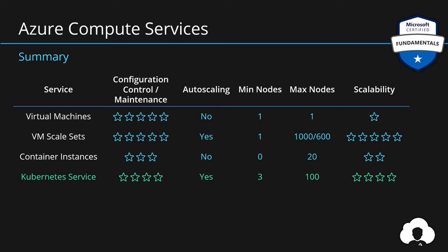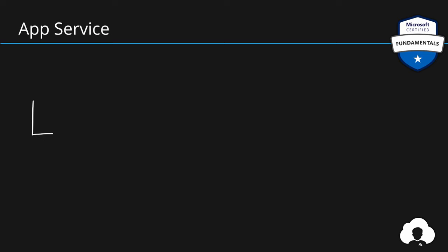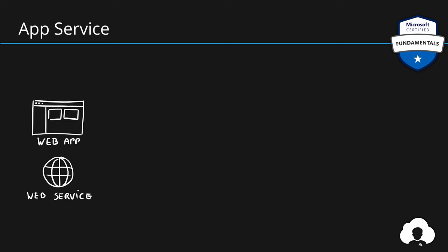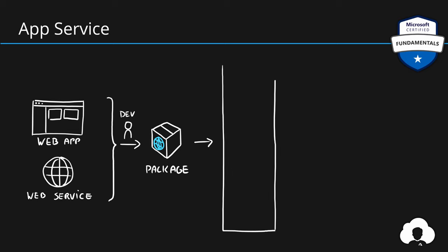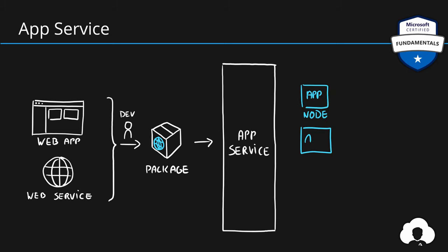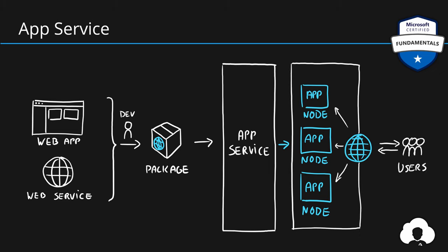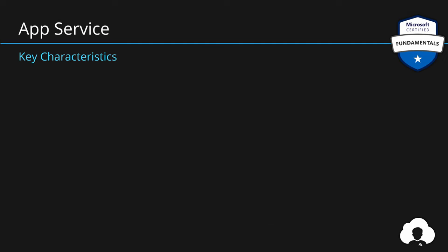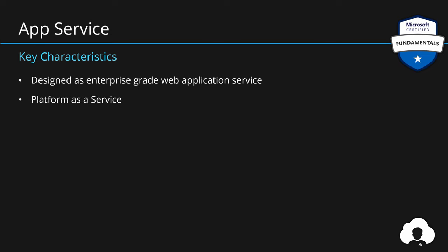If we want to reduce the maintenance cost even further, we can move to App Services. The main purpose of this service is building web applications, whether those are user-facing applications or web services. You ask developers to prepare a simple deployment package and send it to App Service. It's App Service's responsibility to deploy this package across multiple nodes and expose it to users. There's no need to create any images and store them anywhere — you simply send your code to App Service and you're done. App Service is Azure's offering for hosting enterprise-grade web applications. It is a platform-as-a-service offering and supports multiple programming languages and also containers.